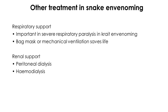Other treatments following snake envenomation depend on the affected organ system. The respiratory system is commonly involved after Indian krait envenomation; along with antivenom administration, respiratory support with bag-mask ventilation or mechanical ventilation is vital to save the life. If the filtration process of the kidneys is affected, peritoneal dialysis or hemodialysis is carried out.